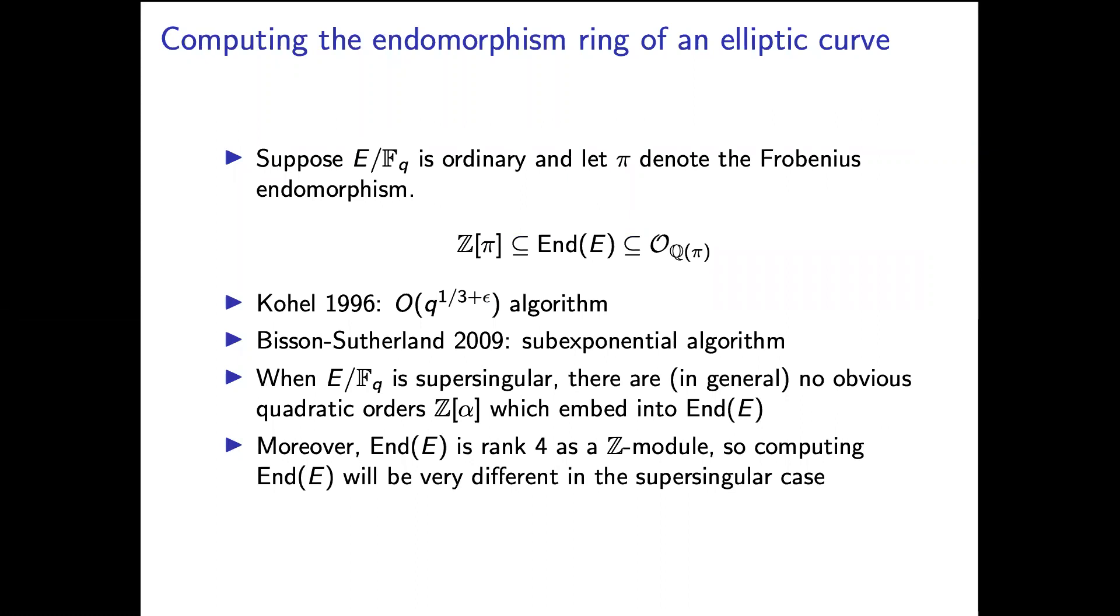When E over F_q is ordinary, if we let π denote the Frobenius endomorphism, then Z[π] is a non-trivial quadratic suborder of the endomorphism ring. And the full endomorphism ring is some suborder of the ring of integers of its endomorphism algebra. And so the whole game is computing this index of Z[π] in End(E).